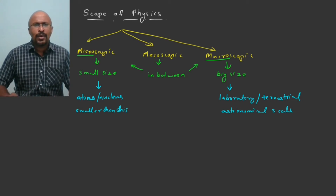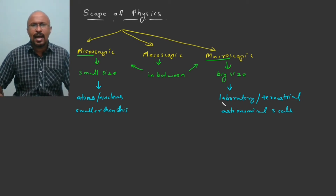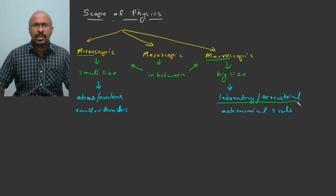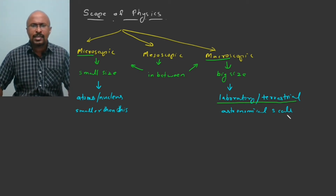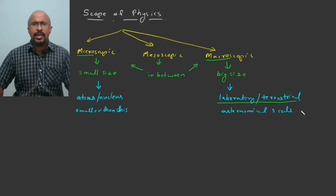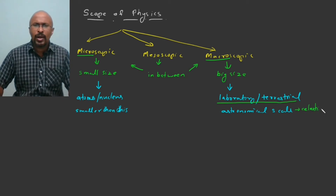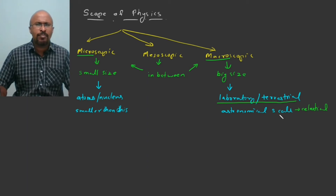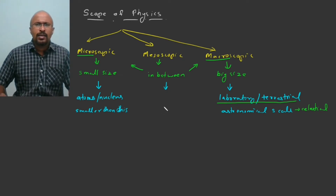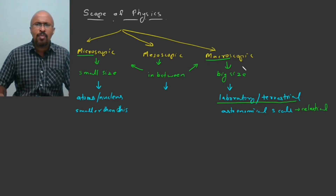At laboratory or terrestrial scale we can see objects directly, but at astronomical scale we need a telescope — these are called celestial bodies. So that is what macroscopic domain means. In the mesoscopic domain, the size is in between microscopic and macroscopic.